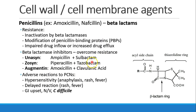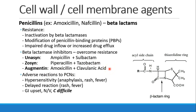In turn, we have come up with ways to overcome the resistance. For example, we have beta-lactamase inhibitors. So we see combinations like Unasyn, which is ampicillin and sulbactam; Zosyn, which is piperacillin and tazobactam; and Augmentin, which is amoxicillin and clavulanic acid.